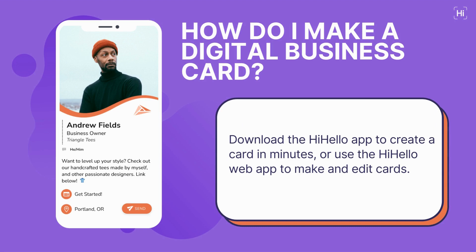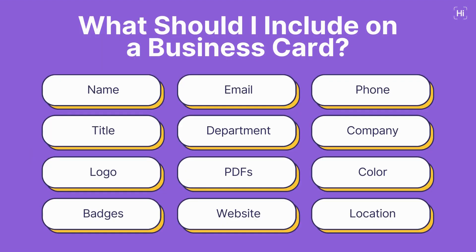Let's talk about making a digital business card with HiHello. First, you're going to need to download the app or go to the web app at HiHello.me, where you can create your digital business card in seconds. Here are a few things you should always include on your business card. The first and most important is always going to be your name — your first and last name — but with HiHello you can also have prefixes, suffixes, accreditations, preferred names, maiden names, and you can even include your pronouns so people will always know how to refer to you.